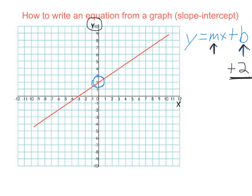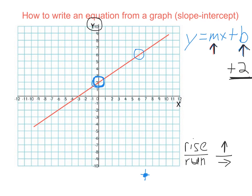Now we need to figure out what the slope is. The slope is always rise over run, which means how far it goes up divided by how far it goes over. We're going to need to pick two points to figure that out. I always like using the y-intercept because we know the x value is going to be 0, and that makes our life easier. Then we pick a second point that is right at the corner of one of these grids so we can find out exactly what the values are.